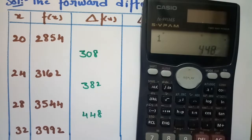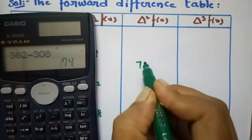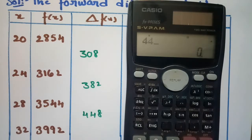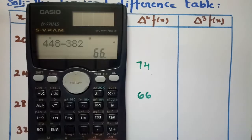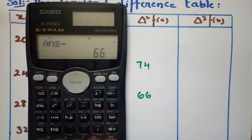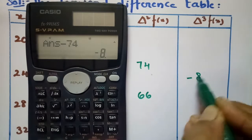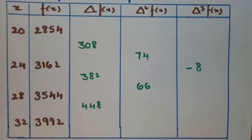The second differences: 382 minus 308 gives 74. The next one is 448 minus 382, which gives 66. Then for the third difference, 66 minus 74 gives minus 8. So this is the forward difference table.